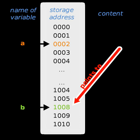A null pointer has a value reserved for indicating that the pointer does not refer to a valid object. Null pointers are routinely used to represent conditions such as the end of a list of unknown length or the failure to perform some action. This use of null pointers can be compared to nullable types and to the nothing value in an option type.